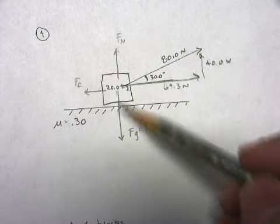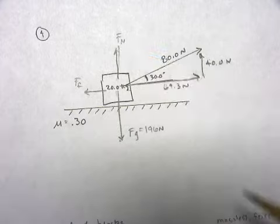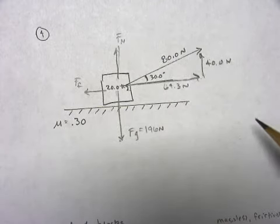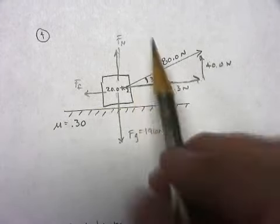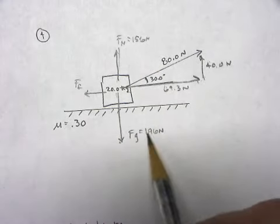All right, so gravity pulls down with 196. This and this have to pull up with a combined force of 196. So that pulls up with a force of 156. This plus this is going to equal that.